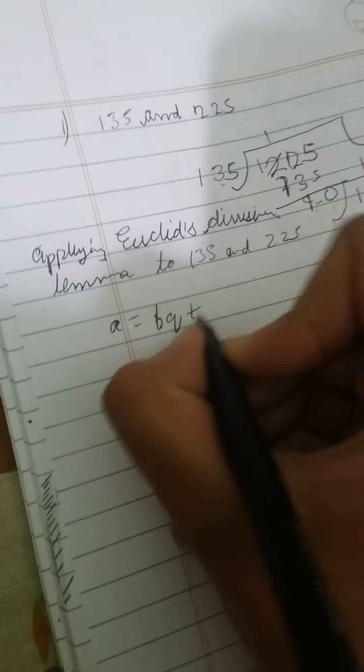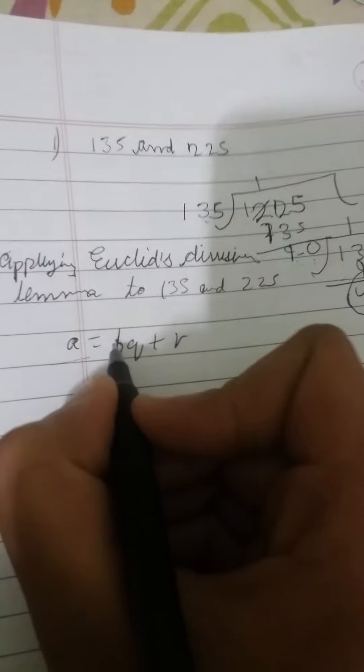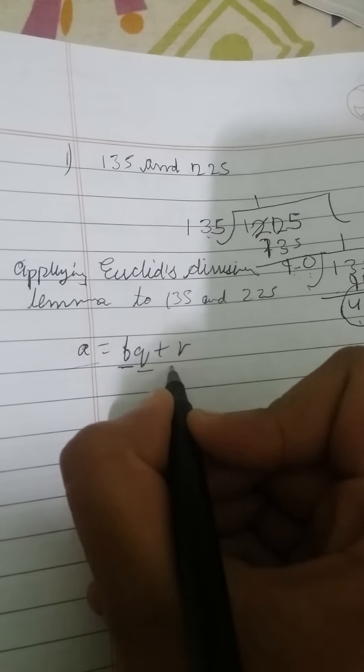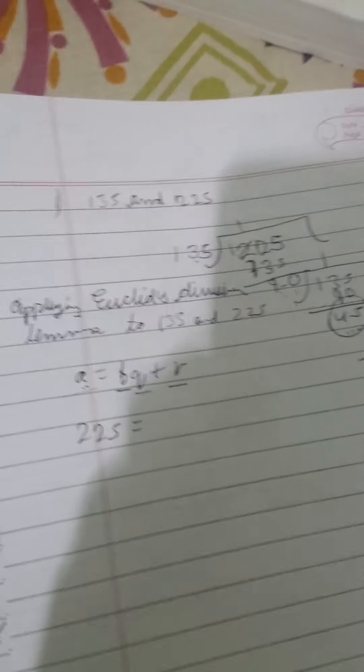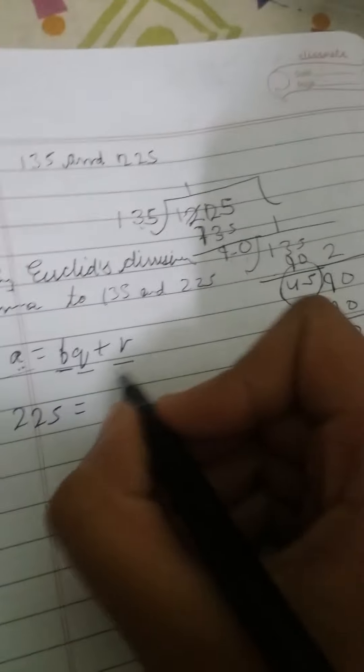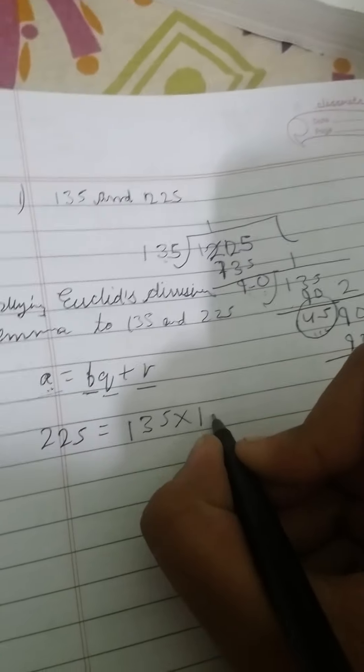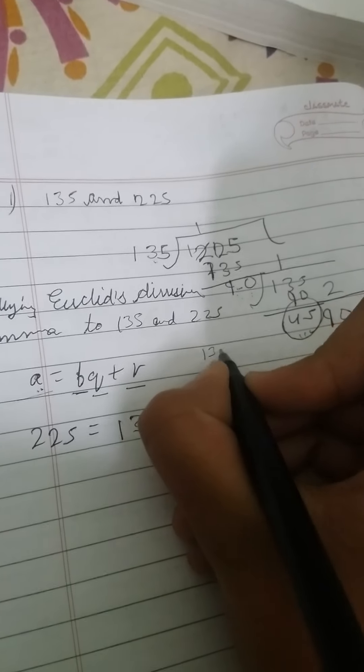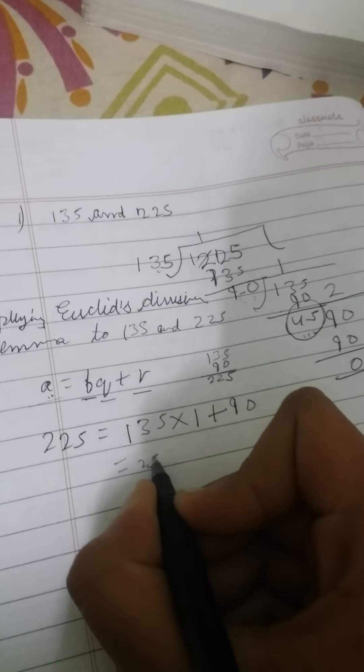According to Euclid's division lemma, a equals bq plus r, where a is the dividend, b is the divisor, q is the quotient, and r is the remainder. In this case, a which is the dividend is 225 equals the divisor 135 times quotient 1 plus remainder 90. Let's see: 135 plus 90 is 225, so LHS equals RHS, therefore we've done the division correctly.